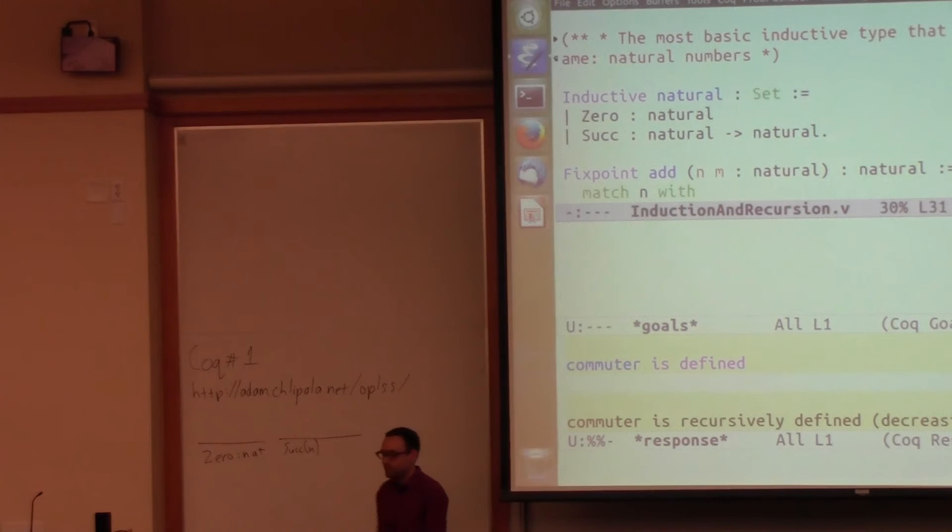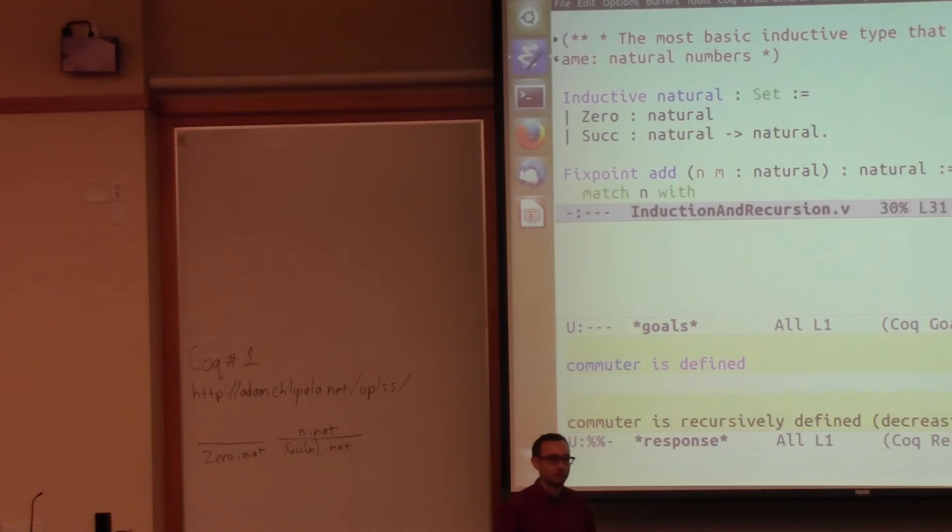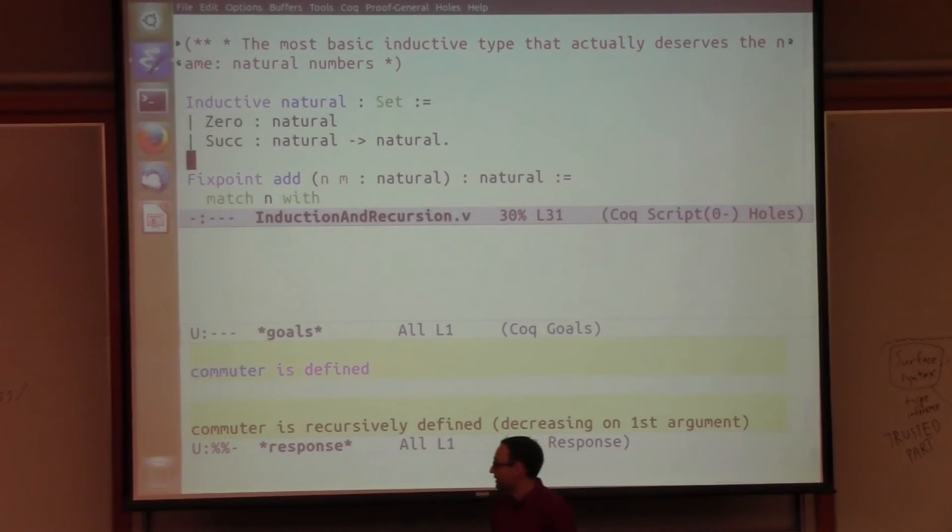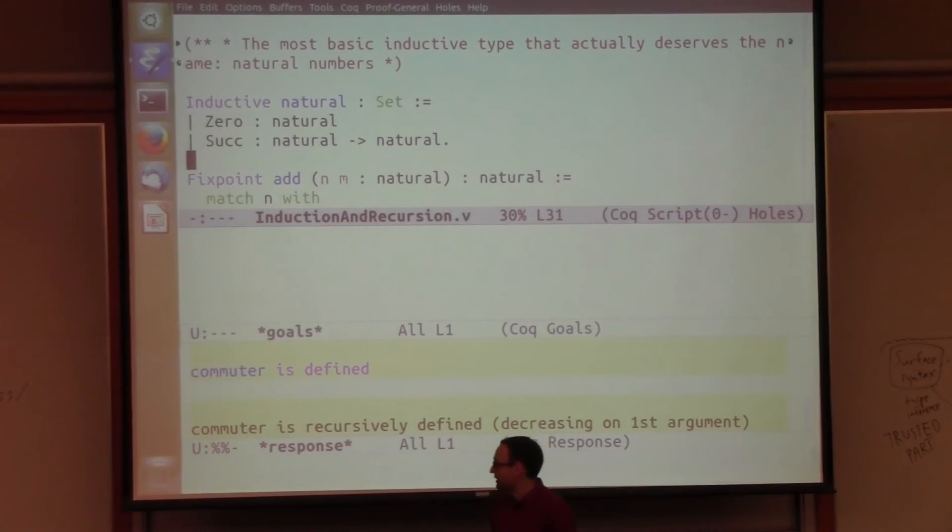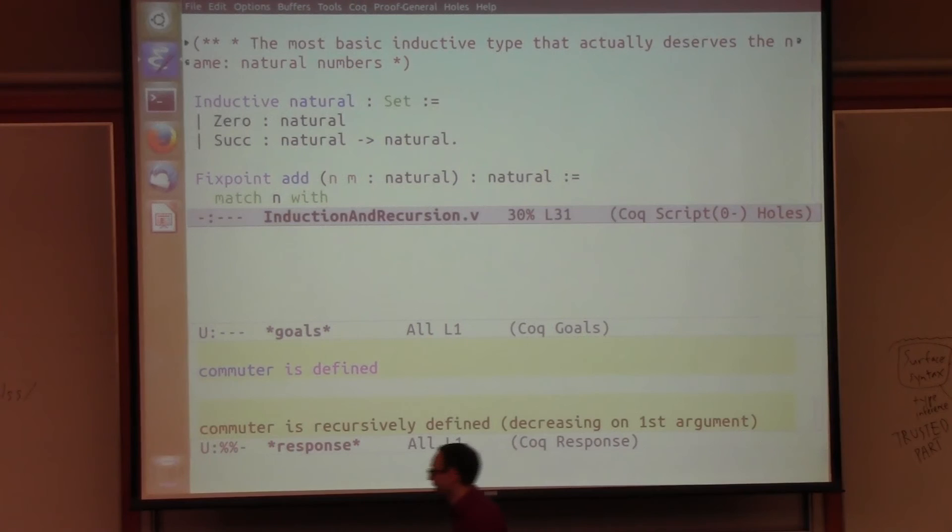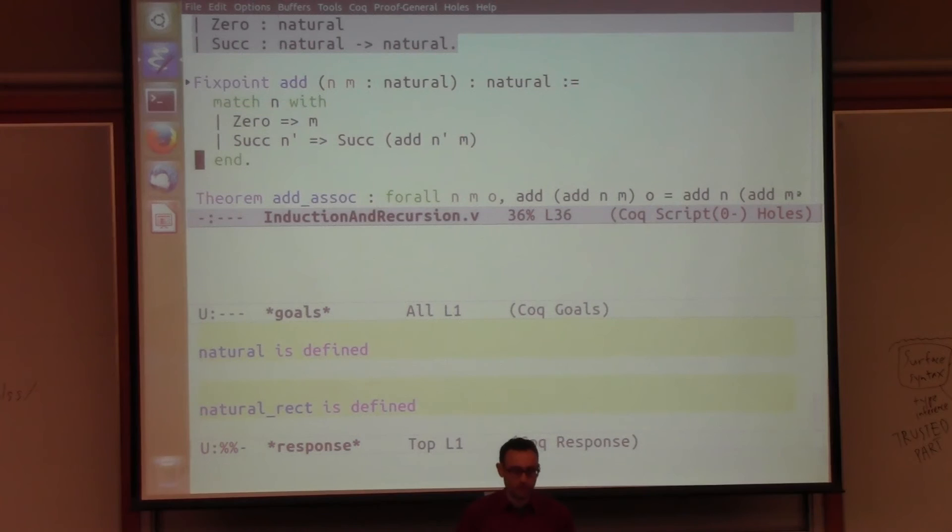And another one that says we have this function succ that stands for successor or plus one. So if we have some natural number n then its successor is also a natural number. It's kind of the most basic inductive definition that is not trivially recursive. It's a definition of a type in terms of itself and it happens to correspond to our usual intuitive idea of the natural numbers. We can write any number we have, any number k is really just encoded as the repeated application of the successor function k times to the zero constructor. So that's the isomorphism with our usual grade school idea of what are natural numbers.